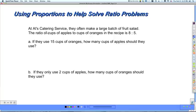Let's take a look at this first problem. At Al's Catering Service, they often make a large batch of fruit salad. The ratio of cups of apples to cups of oranges in the recipe is 8 to 5. If they use 15 cups of oranges, how many cups of apples should they use? A proportion helps us organize the information and our thinking. I like to begin with some labels so I know what is in my proportion. In this case we're talking cups of apples and oranges, so I would label apples and oranges.